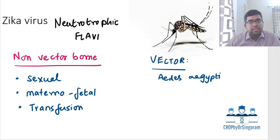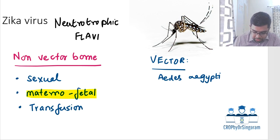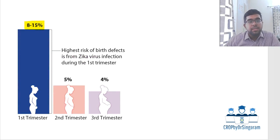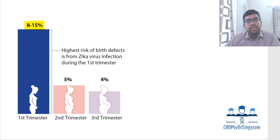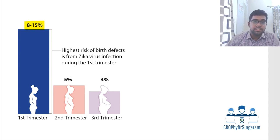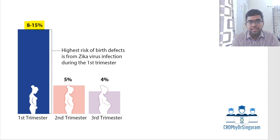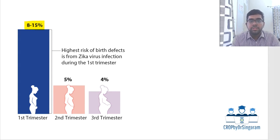The main focus here is materno-fetal transmission, or congenital Zika syndrome. Like other intra-uterine infections, it is most commonly transmitted during the first trimester, with an incidence of 8 to 15%, relatively lesser in other trimesters. Importantly, even if the mother is asymptomatic, transmission to the fetus can still occur. Zika infection is usually asymptomatic; if symptomatic, it causes mild viral illness like fever, rash, and conjunctivitis.